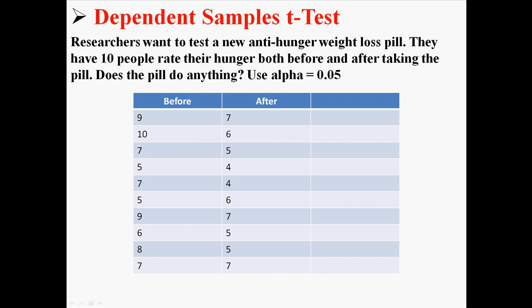Now I'm going to show you a full example of a dependent samples t-test. Researchers want to test a new anti-hunger weight loss pill. They have 10 people rate their hunger both before and after taking the pill. Does the pill do anything? Use alpha 0.05.